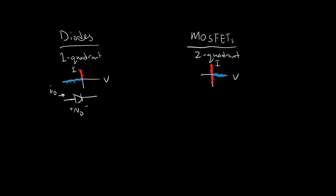MOSFETs can conduct both positive and negative current — they're current-bidirectional devices. So the diode is current-unidirectional and voltage-unidirectional, while the MOSFET is voltage-unidirectional and current-bidirectional. To give these positive and negative directions, you have to define the way the device looks to define the voltages and currents.